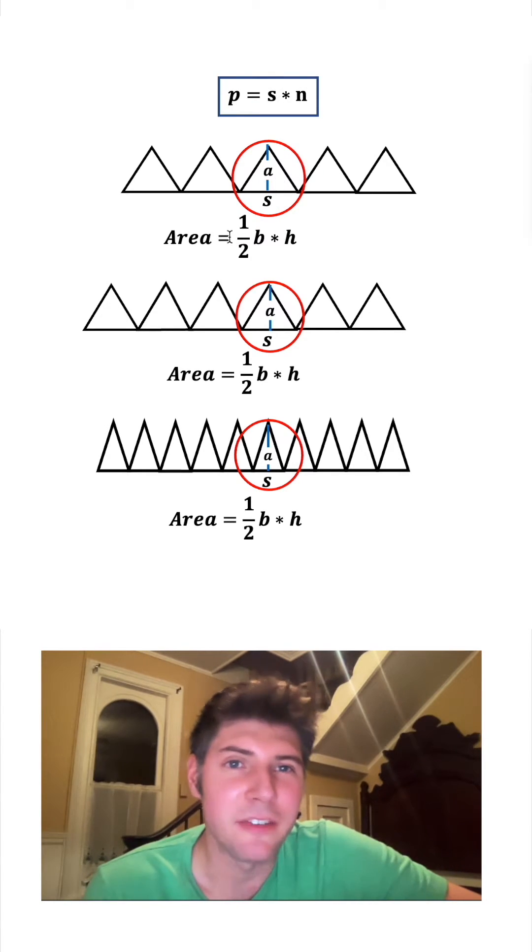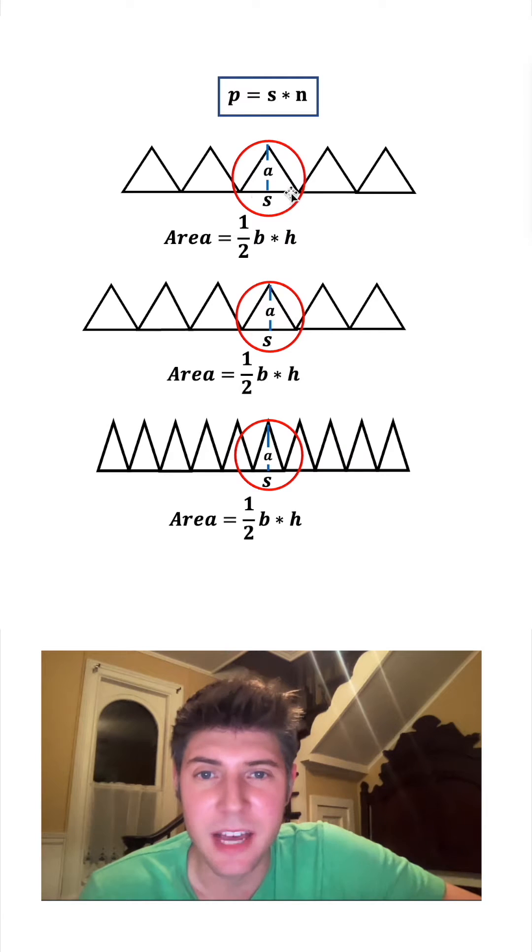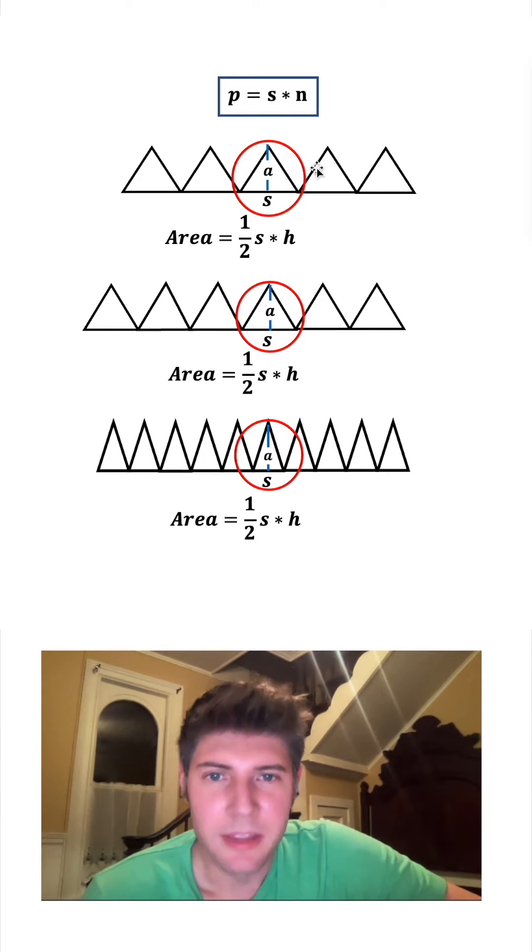Well, the area of a triangle is one half base times height. Our base is that original side length S, and the height is our apothem. So we can change each of these H's into an A.